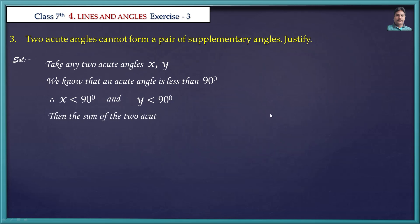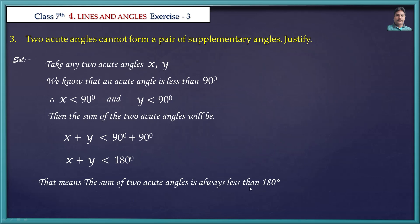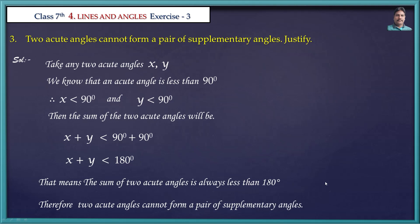Then the sum of the two acute angles: since each acute angle is less than 90 degrees, x plus y is less than 180 degrees. That means the sum of two acute angles is always less than 180 degrees. Therefore, two acute angles cannot form a pair of supplementary angles. In this way, we can prove this.